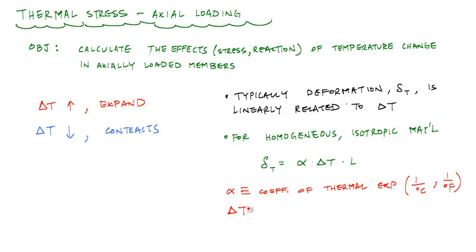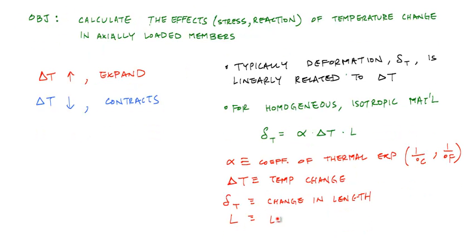And then that delta T is the actual temperature change. If the temperature is increasing, it's a positive change. If decreasing, it's a negative change. Here, this lowercase delta T is the axial deformation, or the change in length that occurs due to the temperature effect. And L is the length of the material.